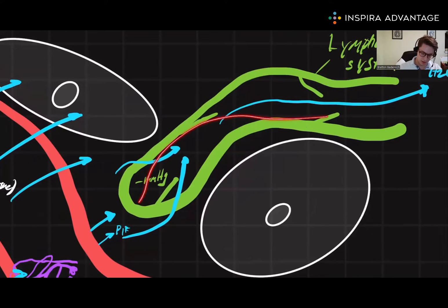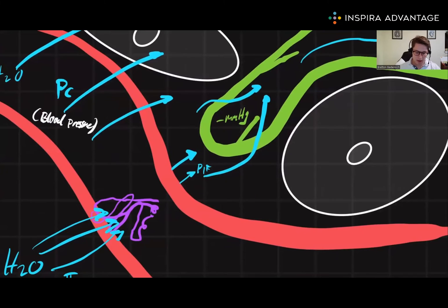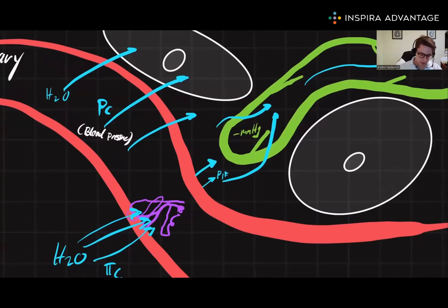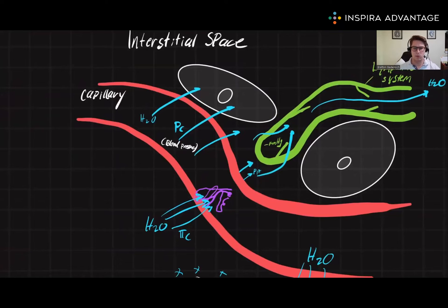Now, this will eventually lead and dump back into the heart, but a big role of the lymphatic system is to clear this excess fluid from the interstitial space into the heart. And it can clear about three liters of water a day or a fluid a day, which is pretty significant.